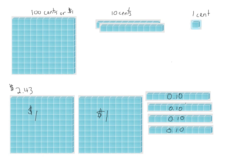And now we need three of these cents. So we'll drag those down here. There's one, two, and three. Now the reason why I wanted to show you this way is that it makes a connection between decimals and fractions fairly easy. You can see that we have two dollars and forty-three cents.